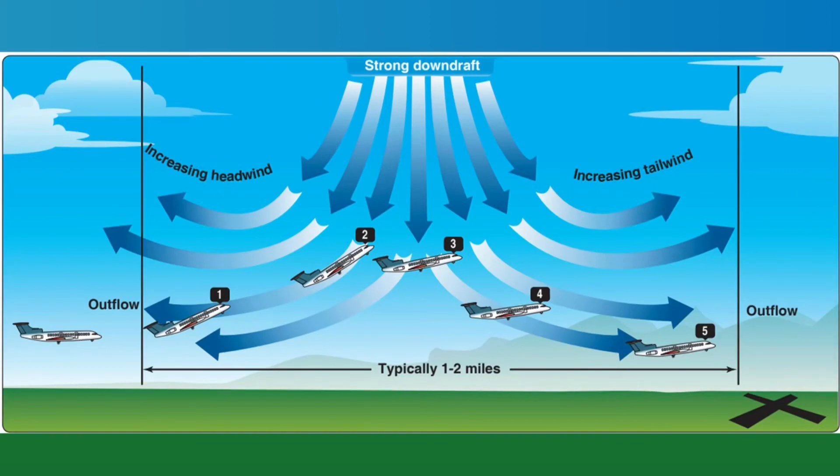The FAA has a similar figure to the animation we are seeing here that they might ask you about on the IFR written exam. In this figure, which we now see on our screen, there is an aircraft in five different positions through a microburst, and the FAA is going to ask you what each aircraft should expect.